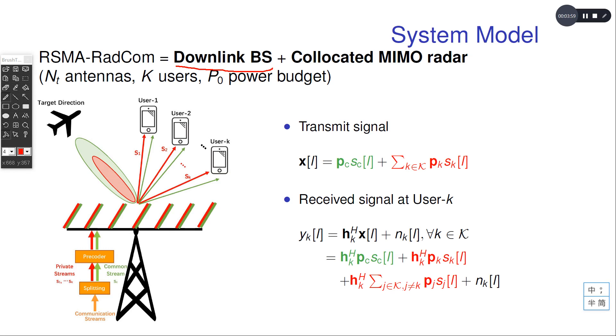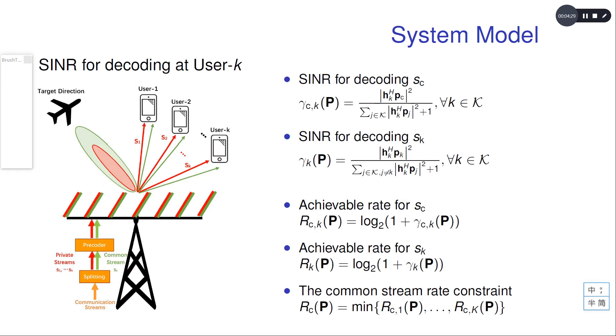Our system has NT antennas, K users and the P0 power budget. We can see that the transmit signal contains the common stream and the private streams, while the received signal at user K also contains these parts.